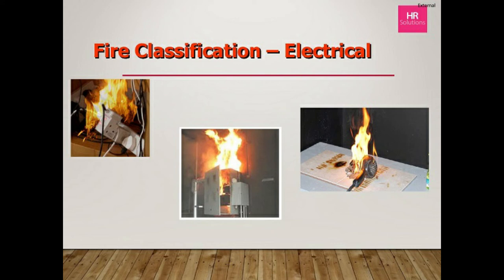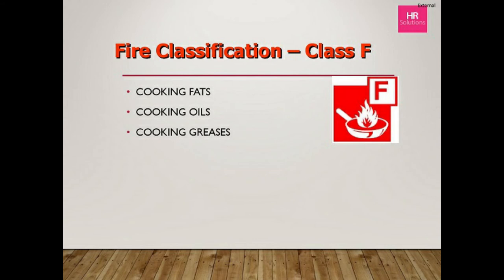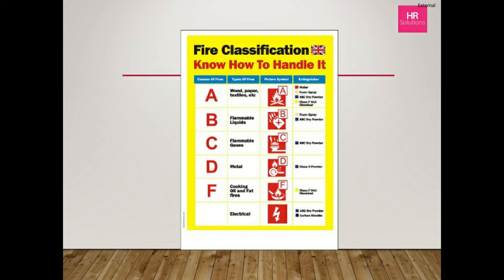Class F is a newer classification covering cooking fats, oils, and greases. Critically, never use a water extinguisher on a Class F fire — a phenomenon called a BLEVE (Boiling Liquid Expanding Vapour Explosion) can occur, turning the water instantly to steam and spreading the fire. Commercial and hotel kitchens need a Class F wet chemical fire extinguisher. A useful fire classification poster showing fire types, symbols, and appropriate extinguishers can be purchased cheaply and displayed in staff areas.